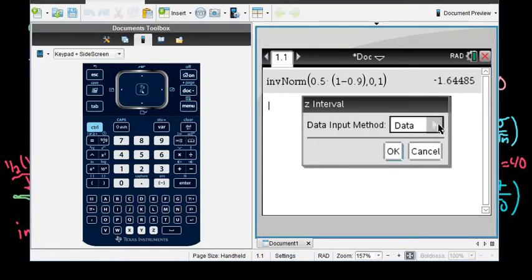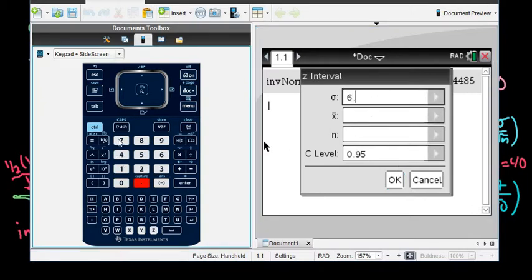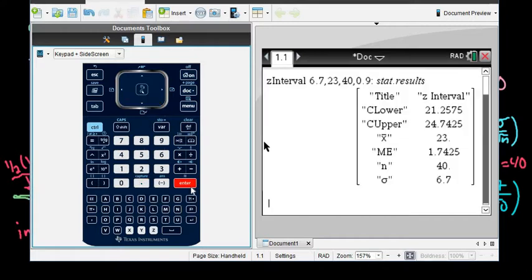And the first thing that will always pop up is, do you have the data? That means that you actually have the values, the actual values that you got from your sample. So I would have 40 measurements that I would have to put into a list. I don't have that. We have the stats. So I would select this. And then we just type in our information. So we would plug in 6.7. For the first one, our X bar was 23. Our sample size was 40. And our level of confidence that we have is 0.9. And then we would just click OK.